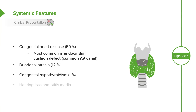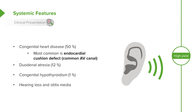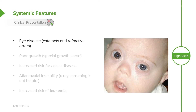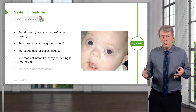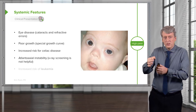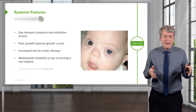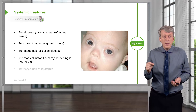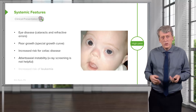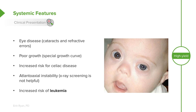Patients may develop congenital hypothyroidism — occurring in about 1% of those with Down syndrome — which should be caught on newborn screening. Hearing loss and especially frequent otitis media are also common. Eye diseases such as cataracts or refractive errors may develop, as well as poor growth; patients should be plotted on their own special Down syndrome growth curves available online. There is increased risk for celiac disease and atlantoaxial instability — instability of C1 on C2 — though routine x-ray screening is no longer recommended, though it may be required for Special Olympics participation. Additionally, there is an increased risk of leukemia.